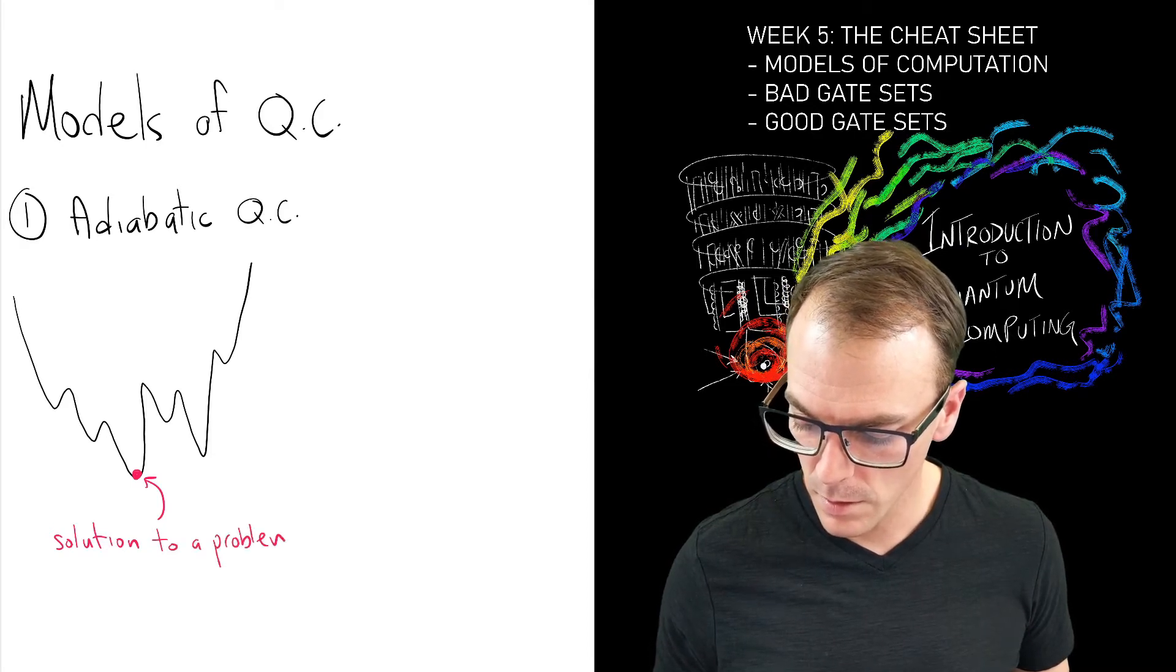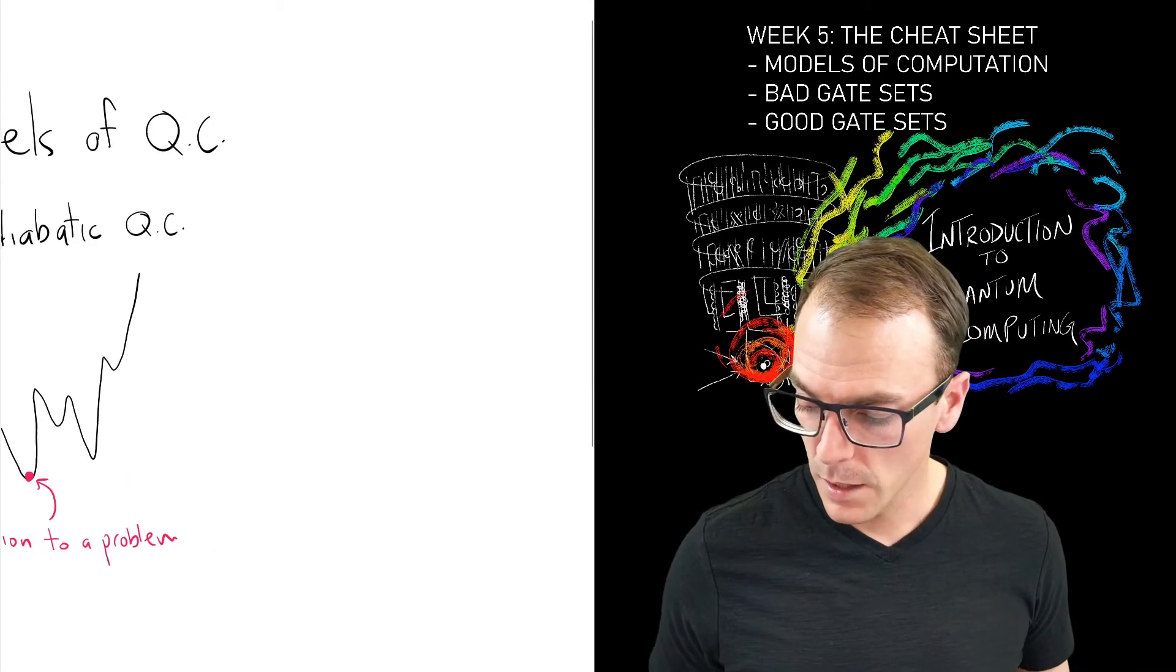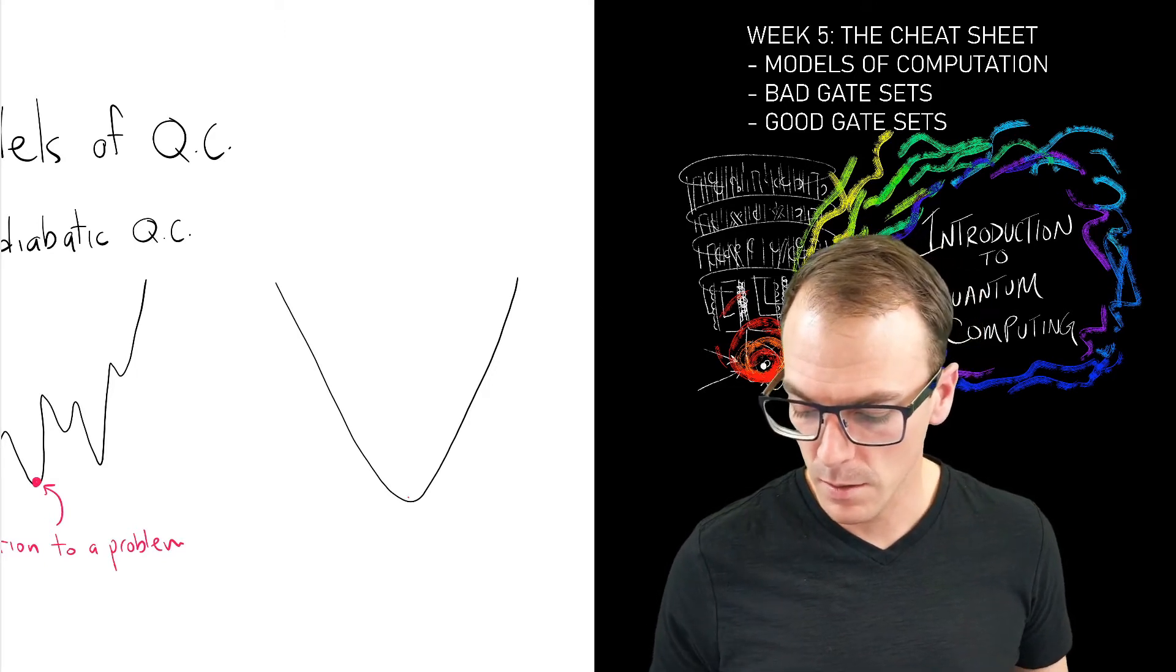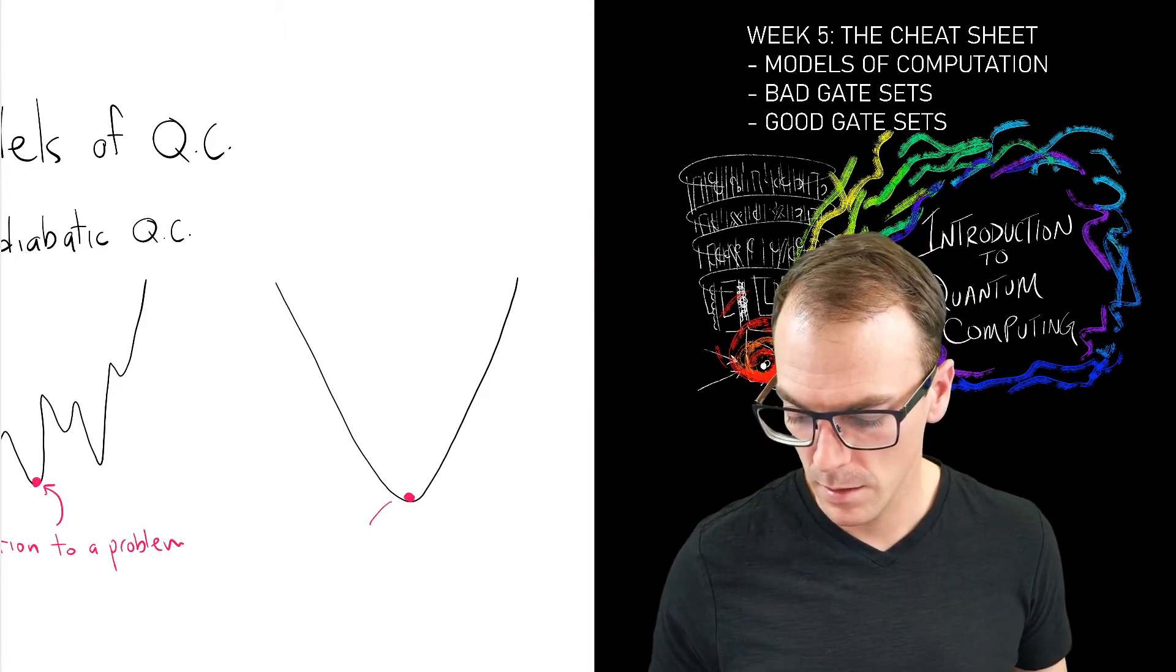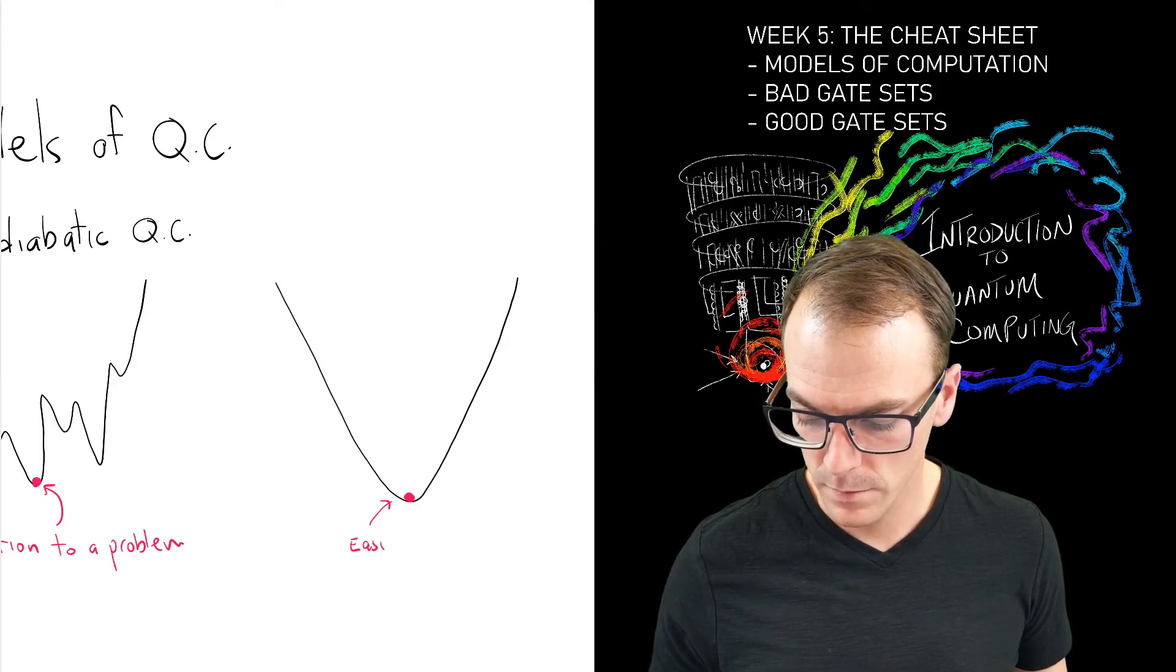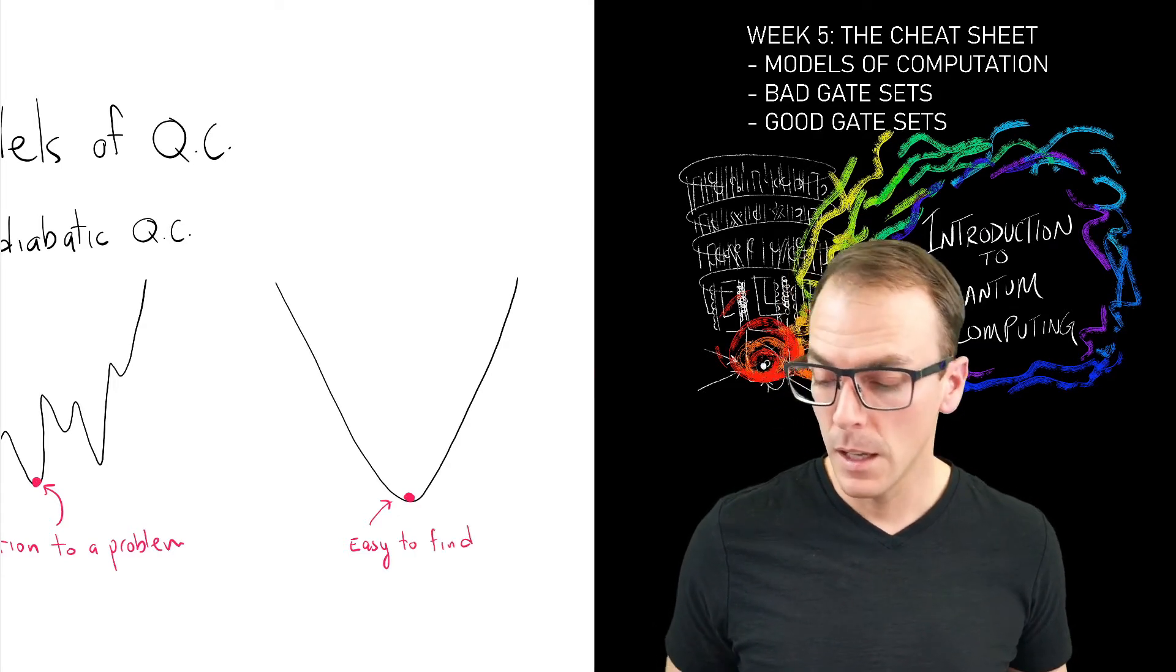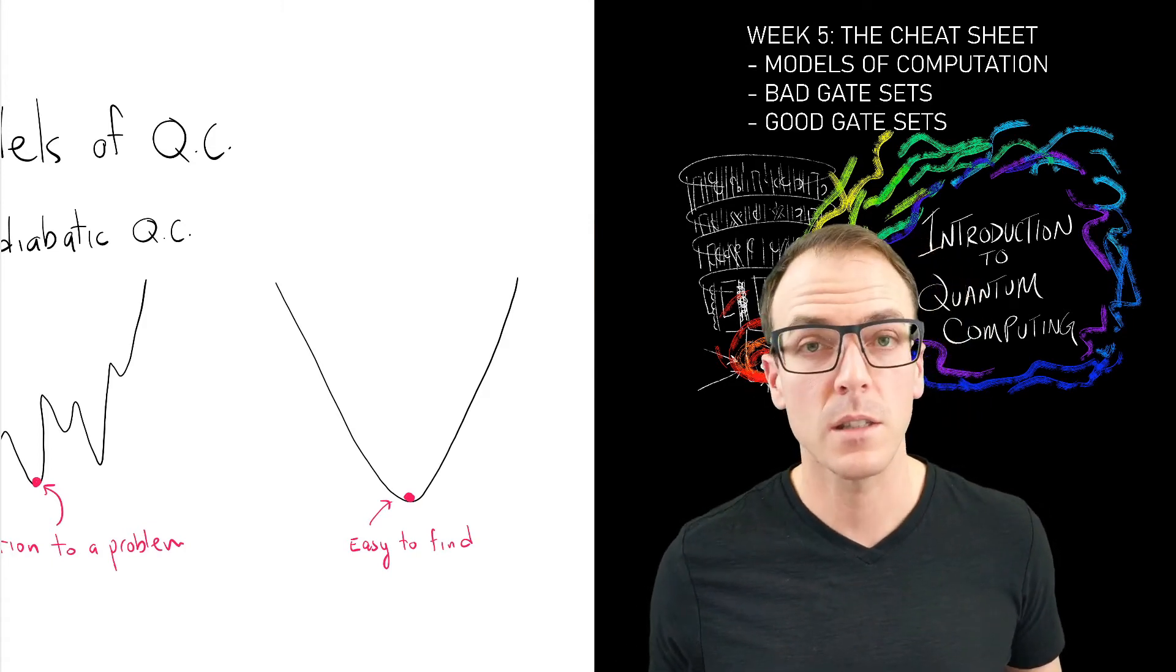So that's the solution to the problem, but it's difficult to find. However, if I was given a function like this, well that's not the solution I'm looking for, but that is easy to find. So I have the function that's easy to optimize and the function that's difficult to optimize.